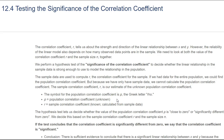Rho is unknown — we do not know what the population coefficient is. But we can run some numbers and work with r, which is our sample correlation coefficient. The correlation coefficient r ranges somewhere between negative 1 and positive 1. If your value is closer to negative 1, then you have a strong negative correlation between x and y — meaning as x increases, y decreases, and as x decreases, y increases. That is a negative correlation.